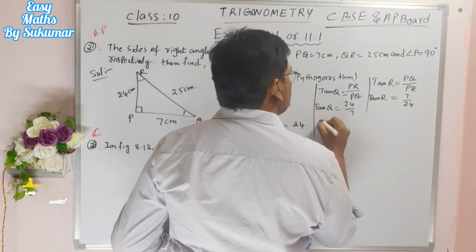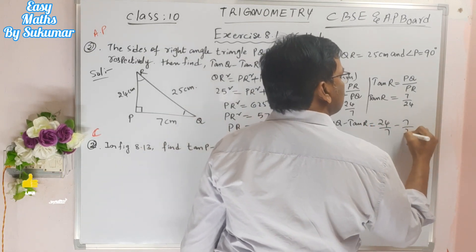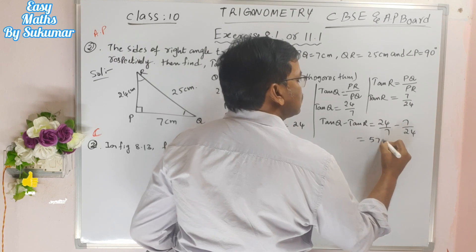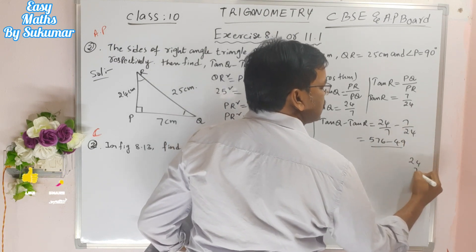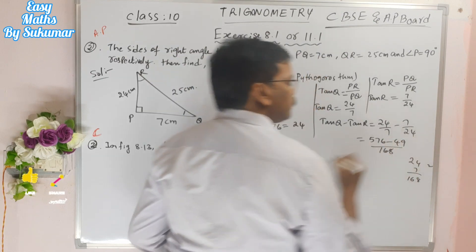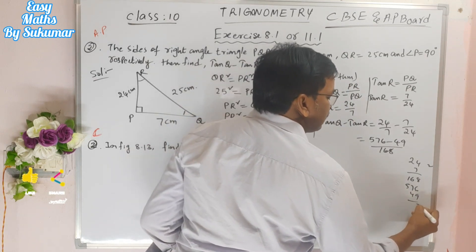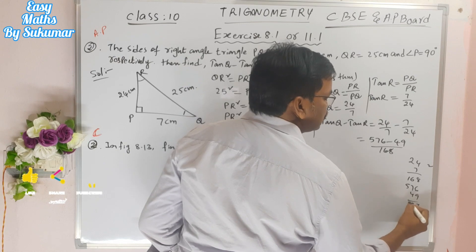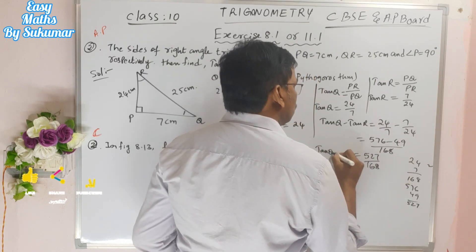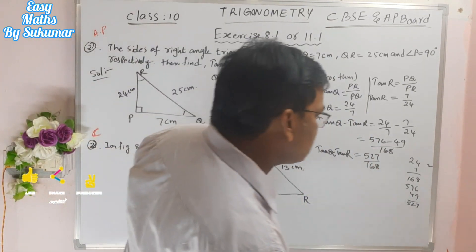Tan Q minus tan R = 24/7 − 7/24 = (576 − 49) / 168 = 527 by 168. So tan Q minus tan R equals 527 by 168.